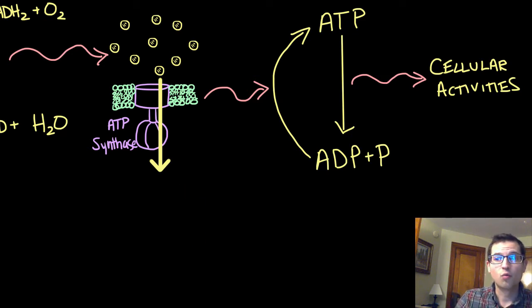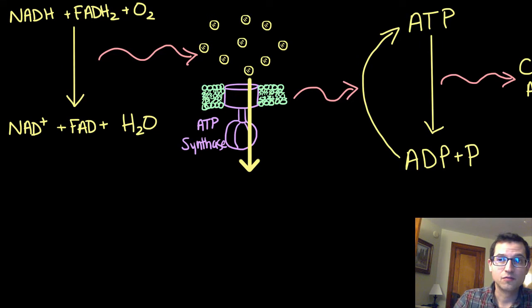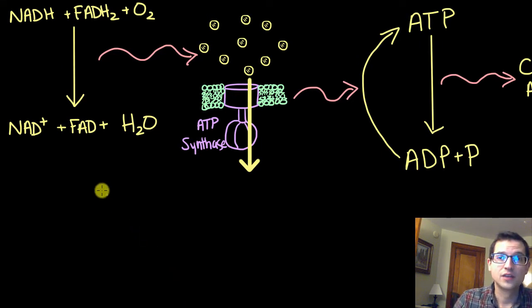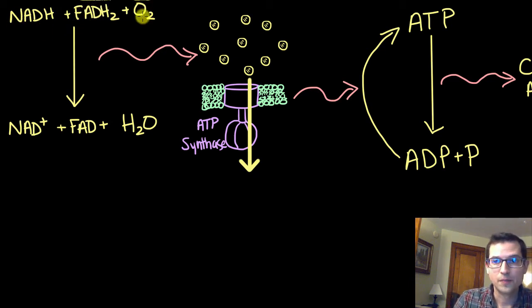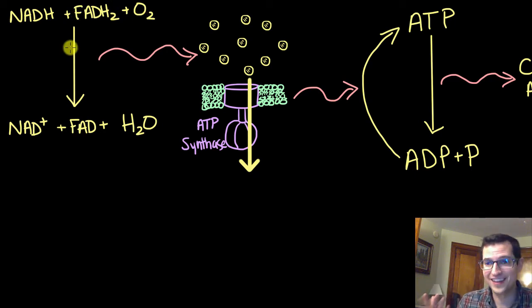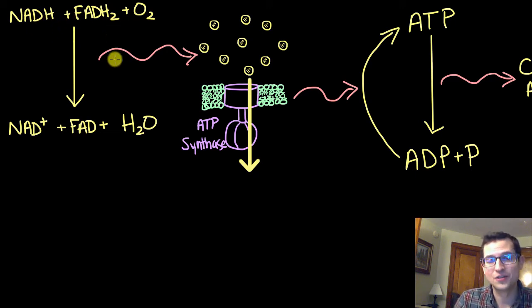We then asked where does the energy come from to make the proton gradient, and we found that the proton gradient gets formed by the electron transport chain, and the energy for that is provided by the reaction of these electron carriers, NADH and FADH2 — the transfer of electrons from these electron carriers to oxygen. And then we were forced to confront the next question: where do NADH and FADH2 get their energy from?